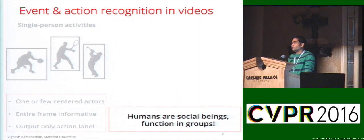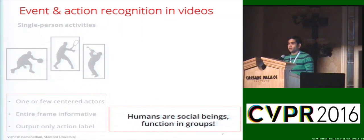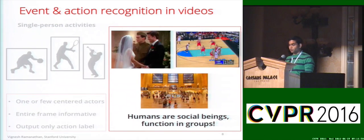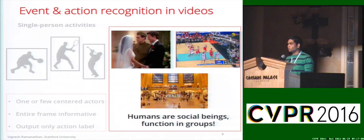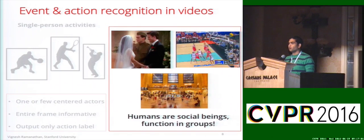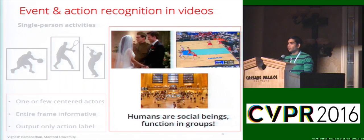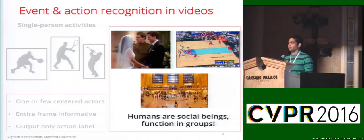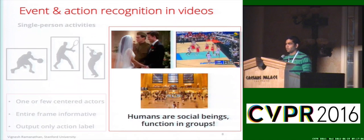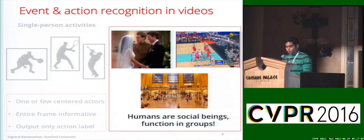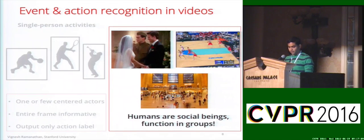But in practice, humans are social beings. We function in groups. When we perform an action, we are often surrounded by other people — be it social events, multi-person sports, or even crowded marketplaces. We want event and action recognition to work in these settings as well. We refer to this as the multi-person setting.